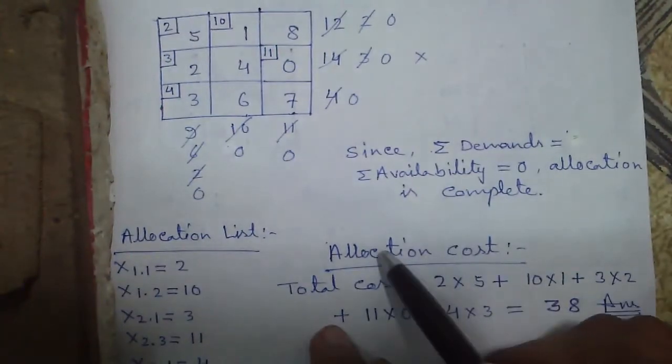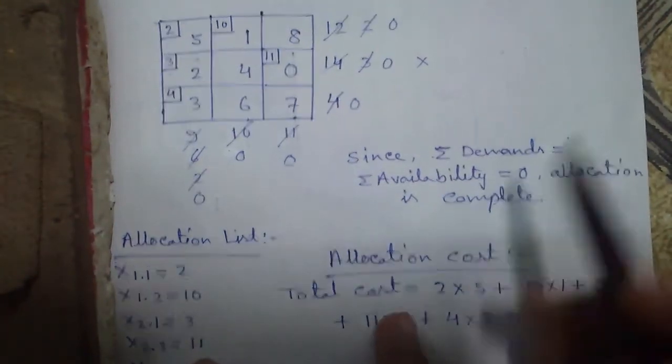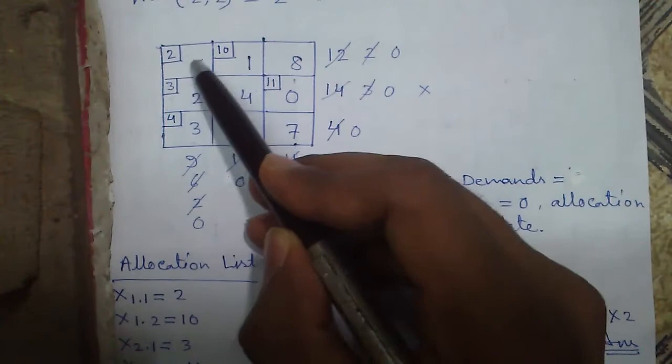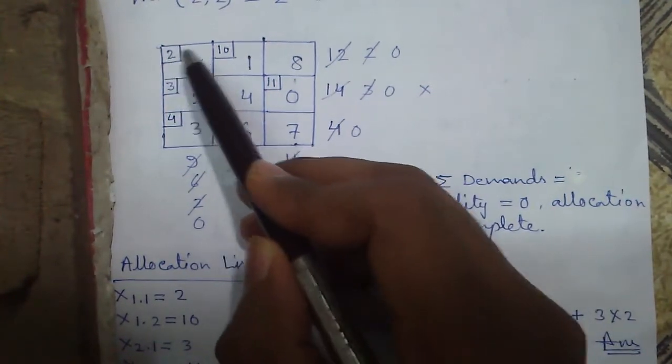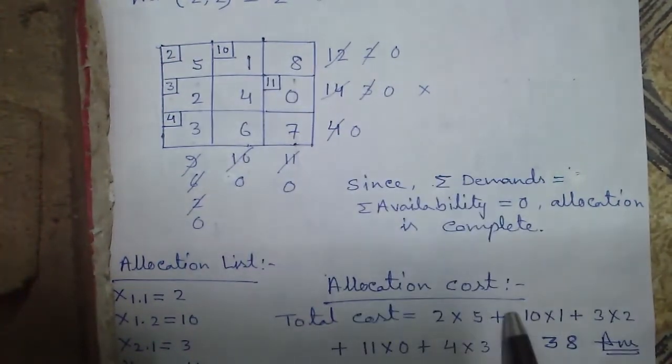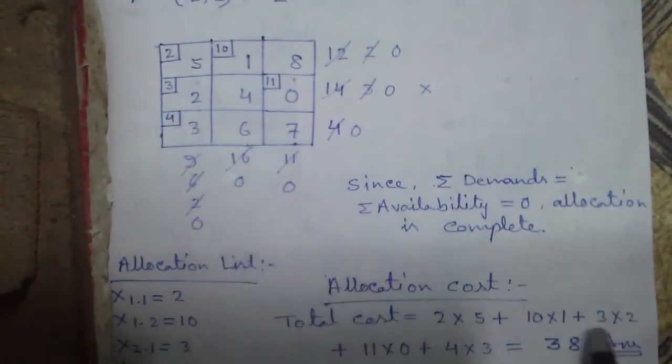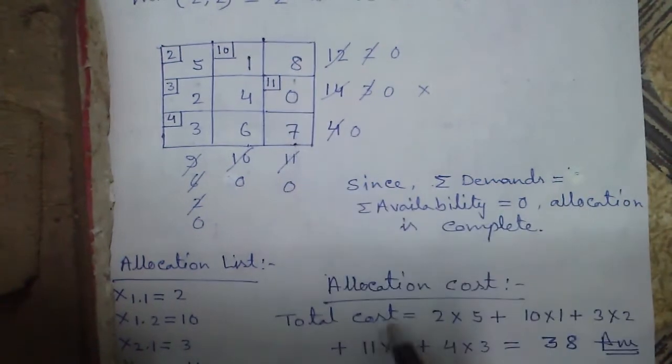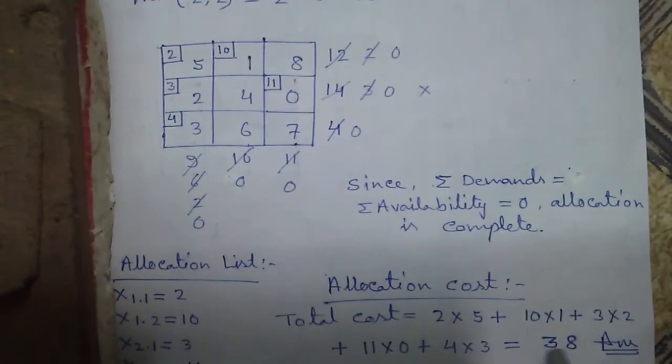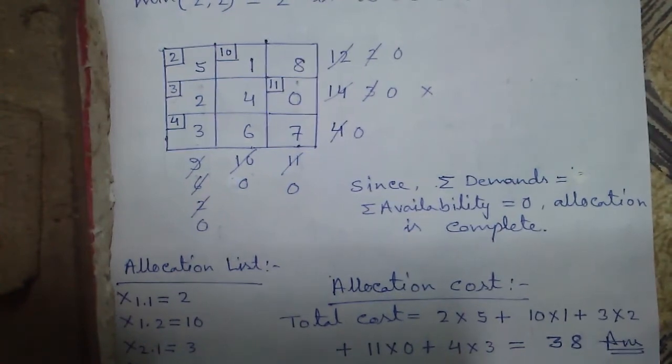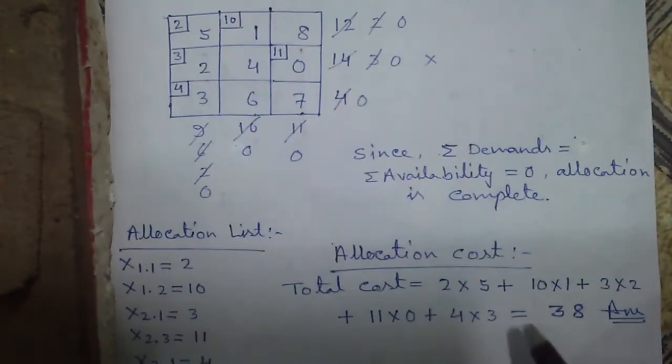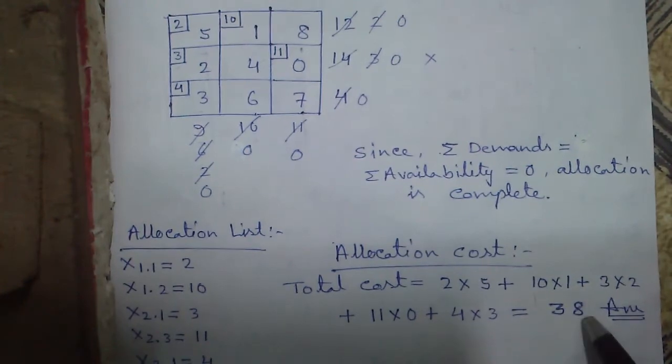These are our main objective to find the allocation cost which is given by allocated value times transportation cost. We have to transport 2 units by the cost of 5. So 2 times 5 plus 10 times 1 plus 3 times 2 plus 11 times 0 plus 4 times 3, which is 38 units of allocation cost which may be in dollar, in rupees or in euros. So this was the answer by matrix minimum method.